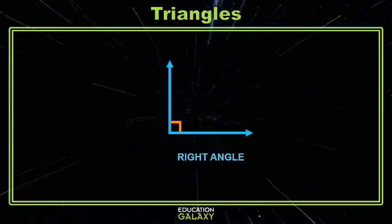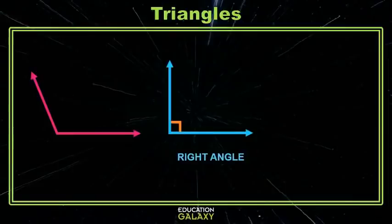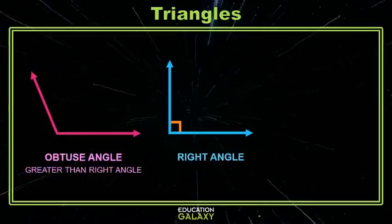So, back to this right angle. Some angles are smaller and some angles are larger than a right angle and those each have names. So, if it's larger than a right angle, that means it's open wider than a right angle. It's called an obtuse angle.